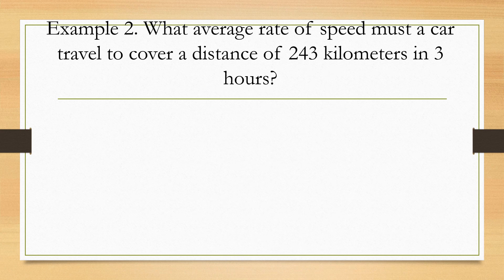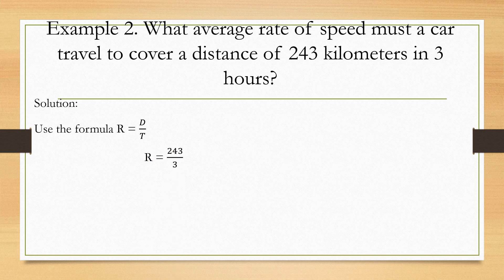Next, let us find the average speed of a car that travels a distance of 243 kilometers in 3 hours. Using the formula rate equals distance over time, we have 243 divided by 3, which equals 81 kilometers per hour.